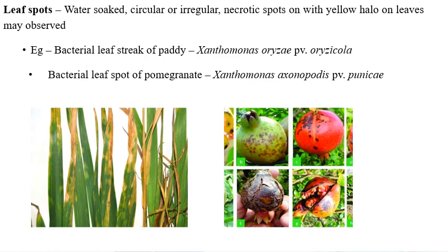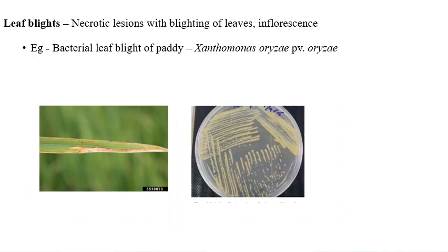The second symptom is leaf blight, where blightening of leaves and inflorescence can be observed. Blightening begins from the edges of the leaves. The best example is bacterial leaf blight of paddy, which is caused by Xanthomonas oryzae pv. oryzae. A culture of this bacterium grown in the laboratory is also shown.